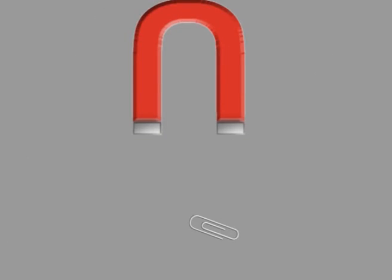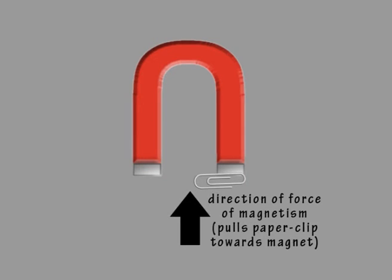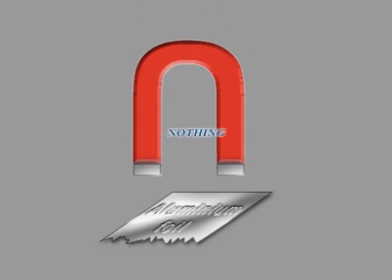What happens when a magnet is placed near a paperclip made of steel? The paperclip is pulled towards the magnet by an invisible force of attraction. What happens when you place the magnet near a piece of aluminium foil? Nothing.